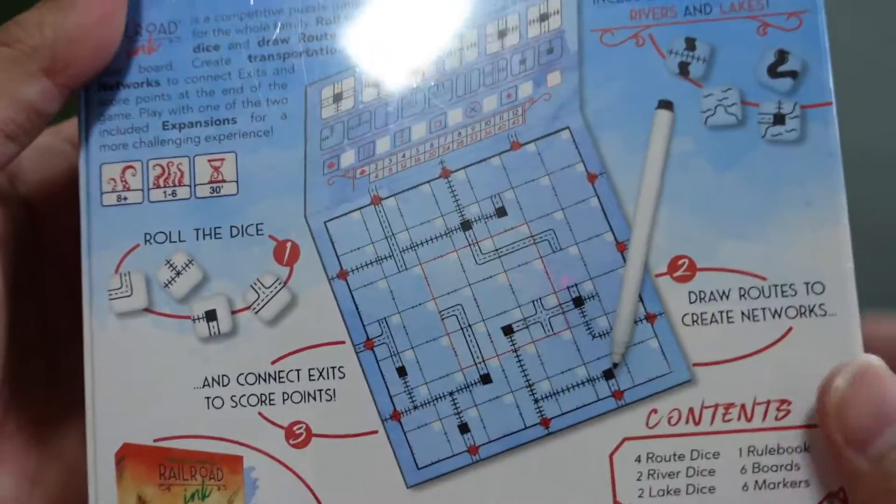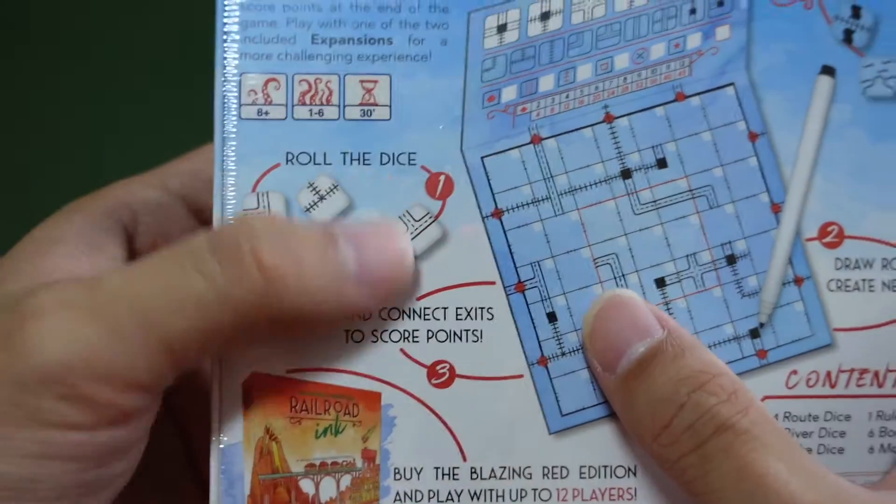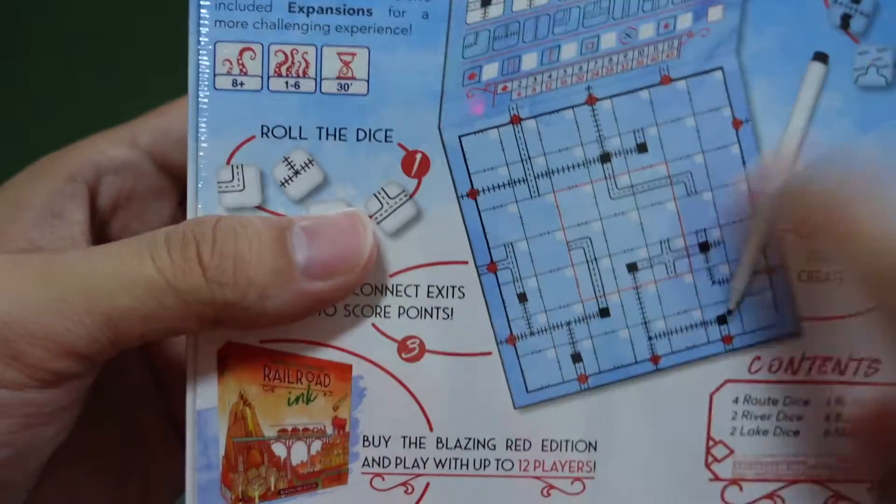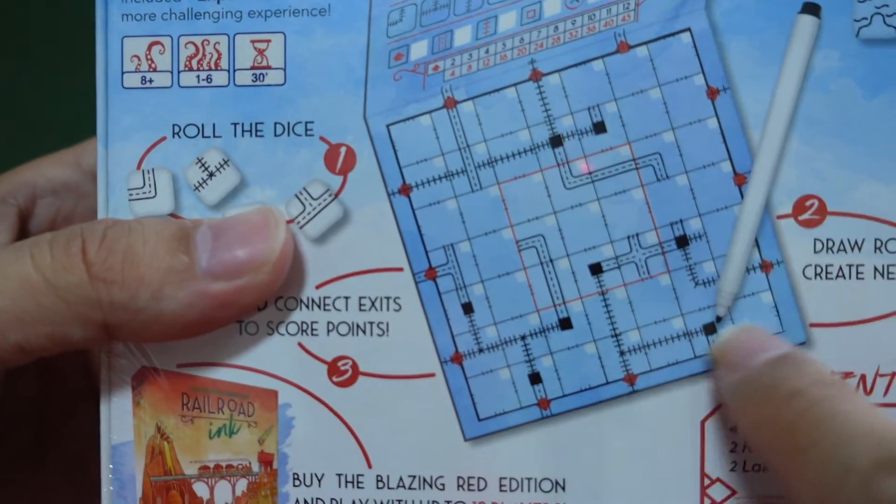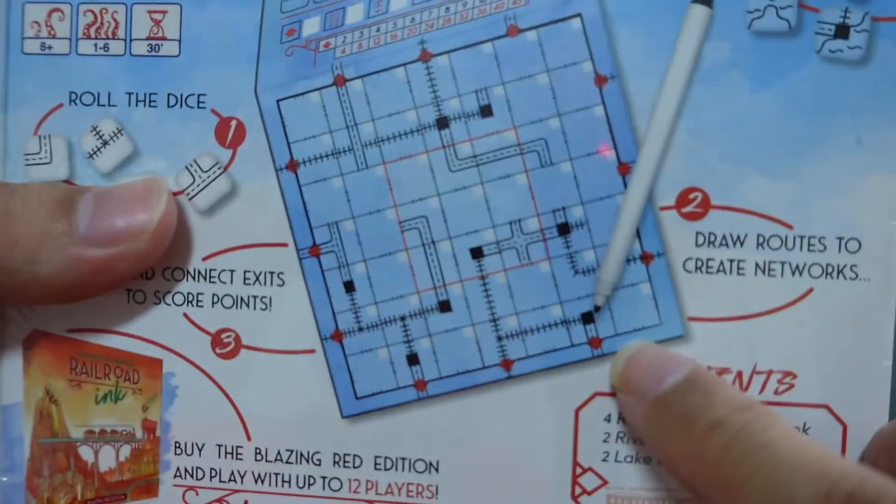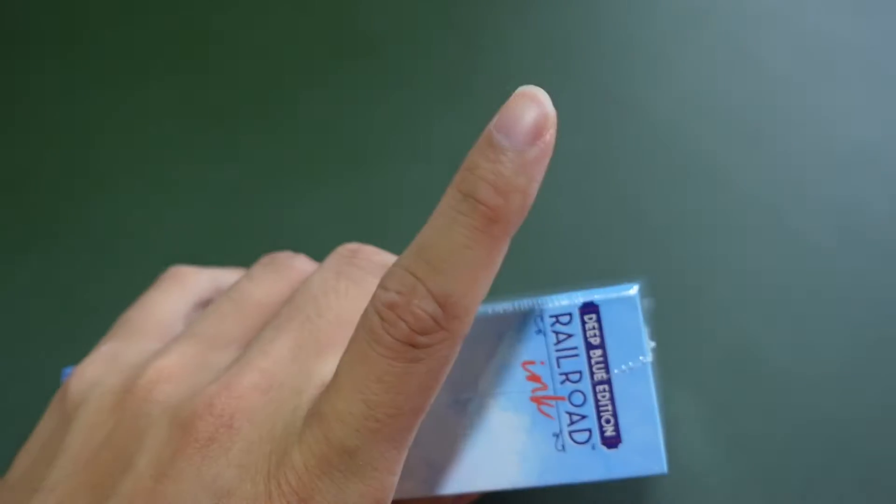This is a roll and write game. You roll your dice and then you draw what the die face tells you to. You can draw it in any manner. I believe you have to start from these red dots here.